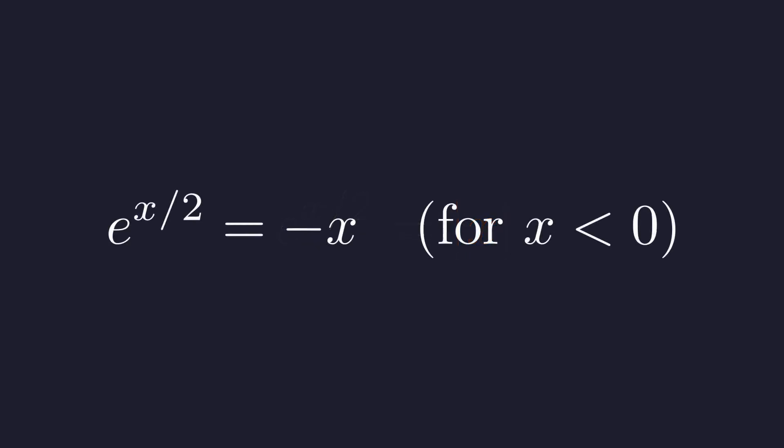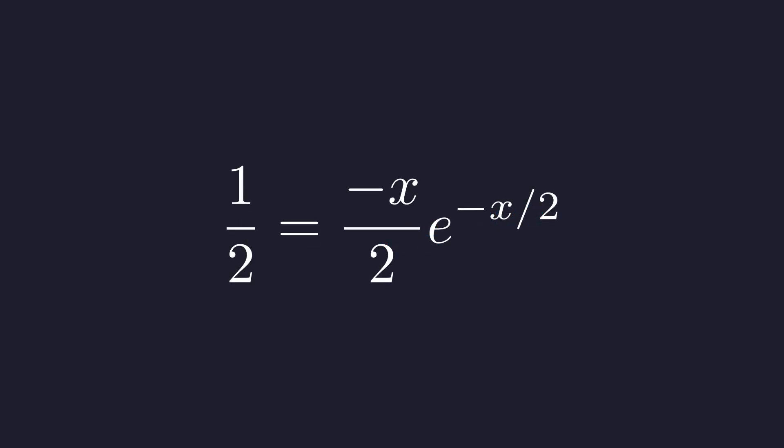Now we need to massage this into a form we can work with. Let's multiply both sides by e to the negative x over 2. This moves the exponential to the right side. We get 1 equals negative x times e to the negative x over 2. To get this into the special form we need, multiply both sides by 1 half. This will make the coefficient match the exponent, which is exactly what the Lambert W function requires. Perfect. Now the coefficient and the exponent match. We have negative x over 2 in both places.